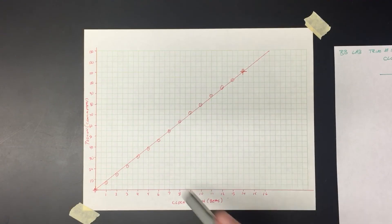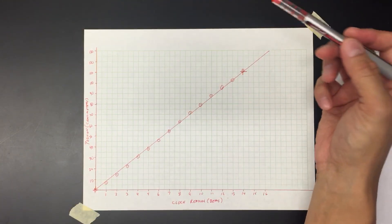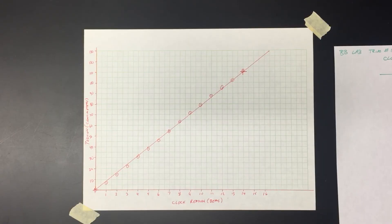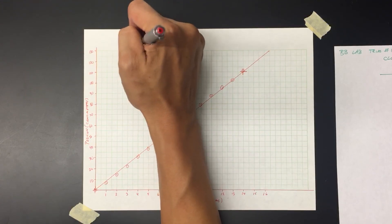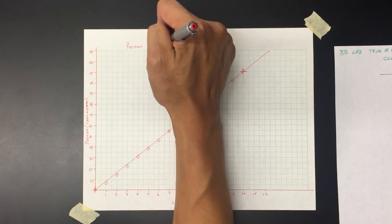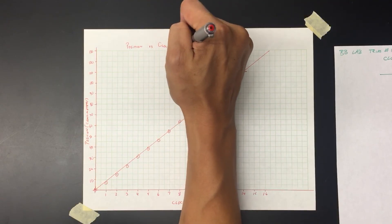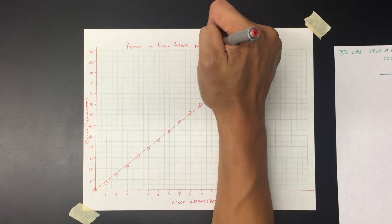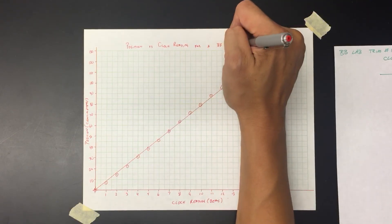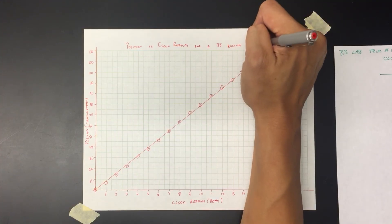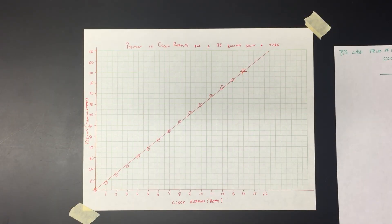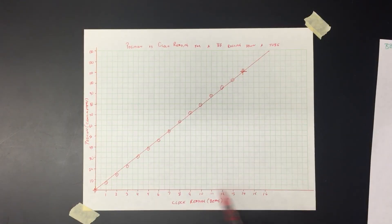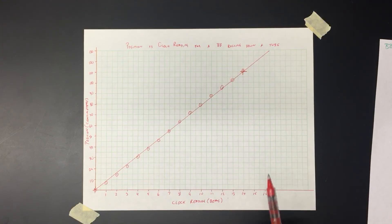The last thing I need to do is put a title on my graph. The convention for titles is always the y-axis variable versus the x-axis variable. So for this graph I'm going to call it 'Position versus Clock Reading for a BB Rolling Down a Tube.' Then I would take my second set of data and plot it on the same graph, maybe using a different colored pen or a different shape point protector to distinguish between the two.